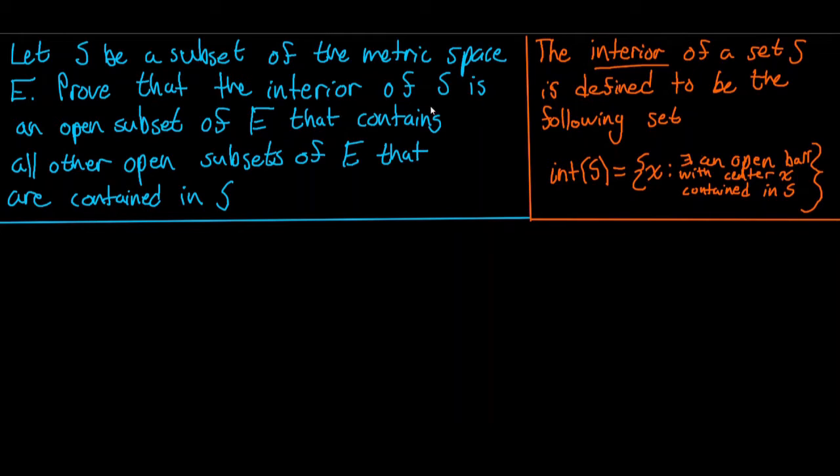Let S be a subset of the metric space E. Prove that the interior of S is an open subset of E that contains all other open sets of E that are contained in S.